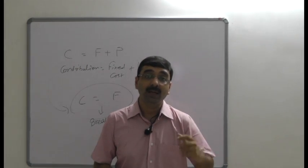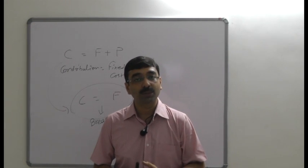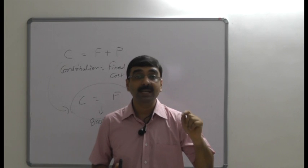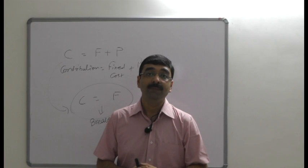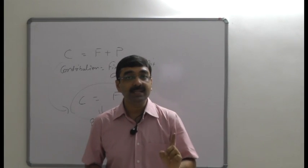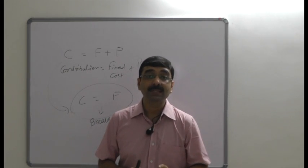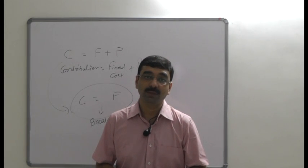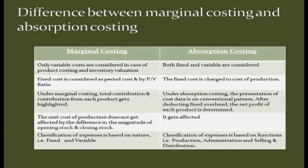The absorption costing technique poses a problem to management in taking managerial decisions, because managers may not always know how much cost has been incurred directly for manufacturing a product, making it difficult to take simple and clear decisions on direct and variable costs. Absorption costing is useful if there is no inventory and the overhead recovery rate is based on normal capacity instead of actual level of activity. The basic difference is that in marginal costing, only variable costs are considered, whereas in absorption costing, both fixed and variable costs are considered.